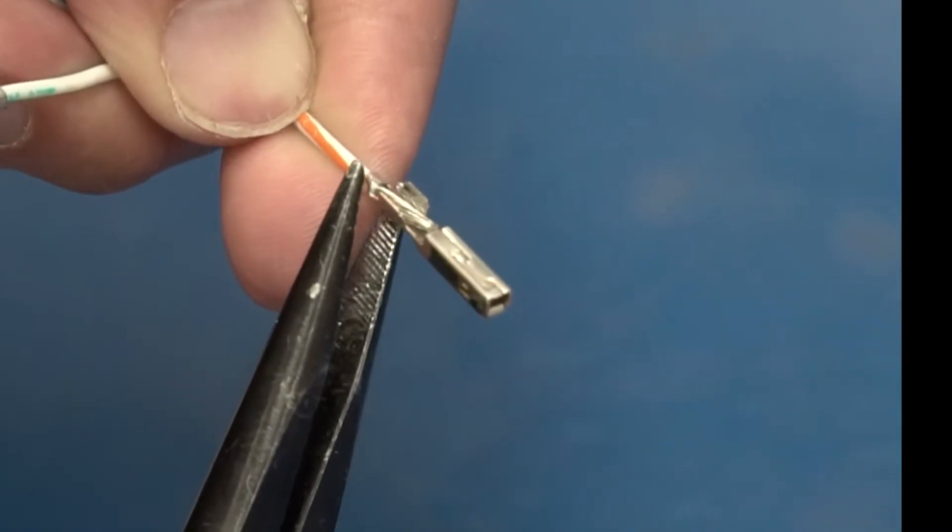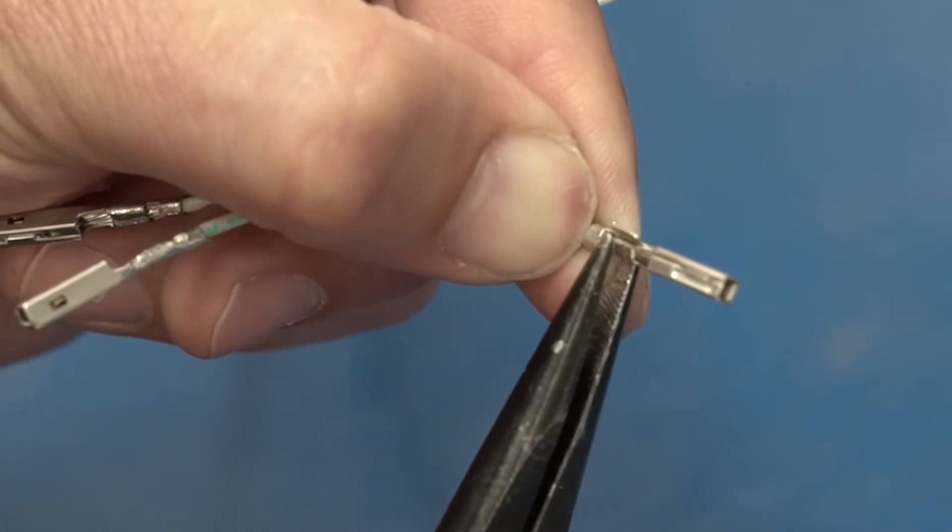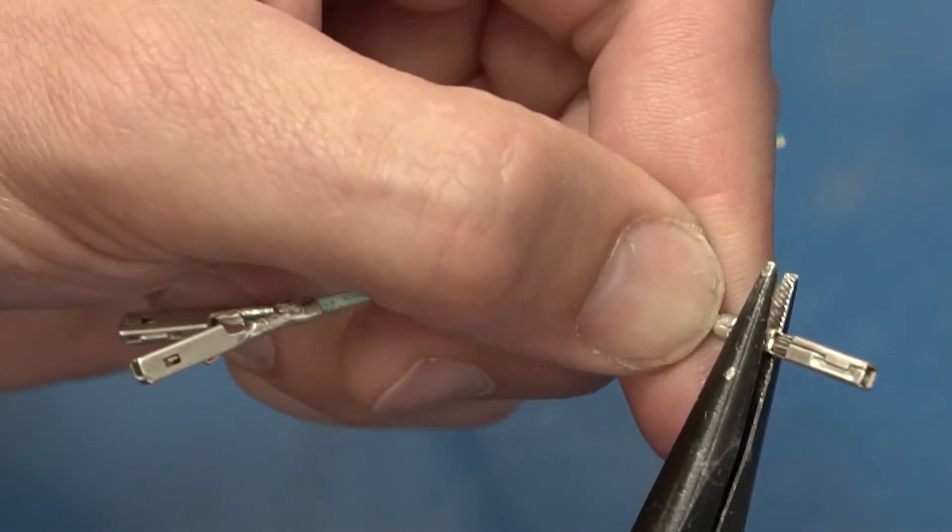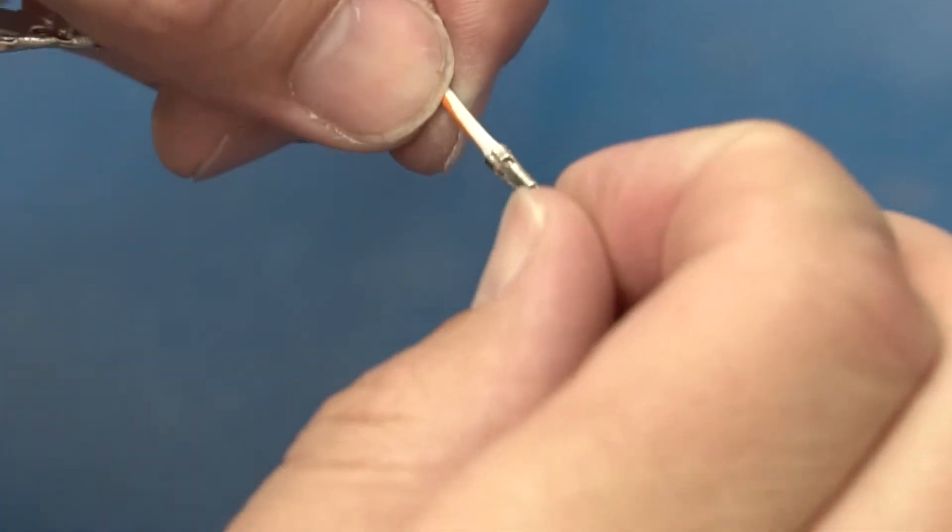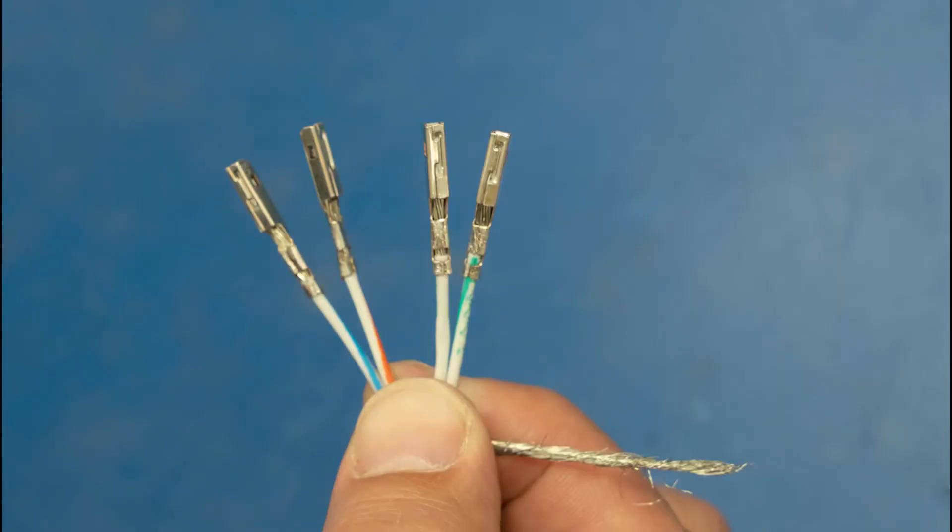Use the wire strippers to strip at that length. Again using the needle nose plier crimp the insulation of the wire first. Next crimp the exposed section of the wire. Always do a pull test to make sure it's mechanically well connected. Repeat the crimping process for the other three wires.